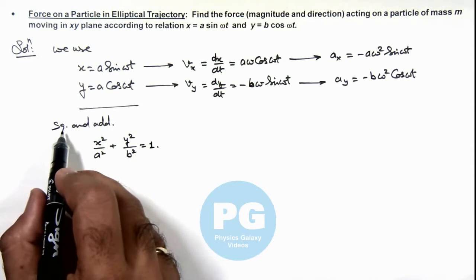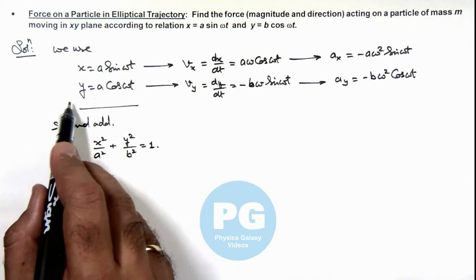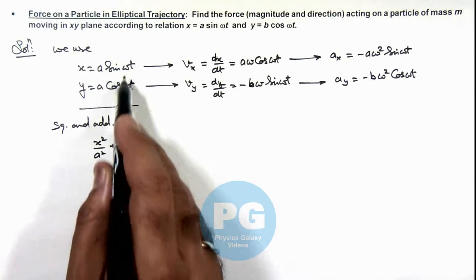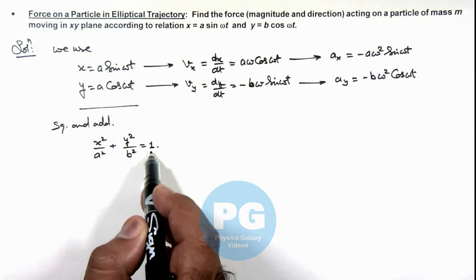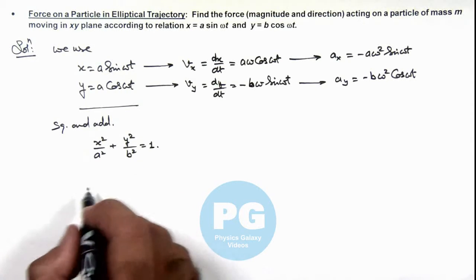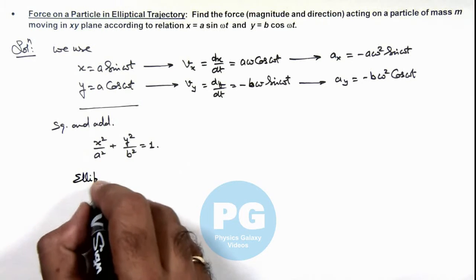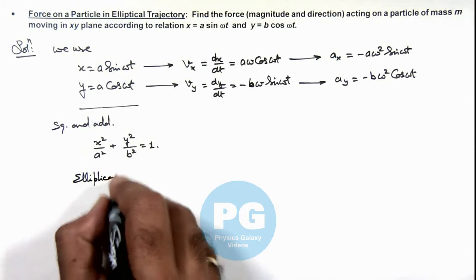Before squaring, you need to take these a and b on the left hand side in denominator and then square and add. So right hand side will be unity and left hand side is this. So this is the equation of trajectory which you can see this is an equation of ellipse. So this will be elliptical path.